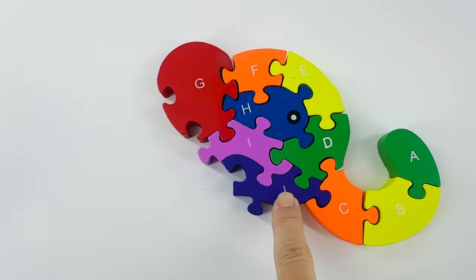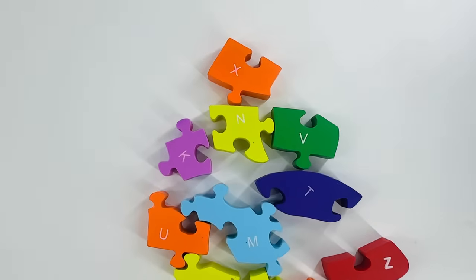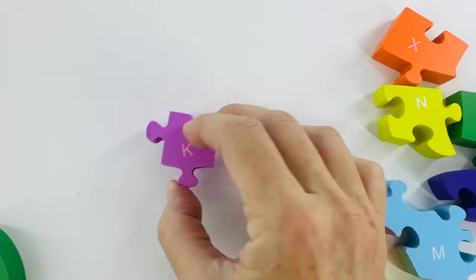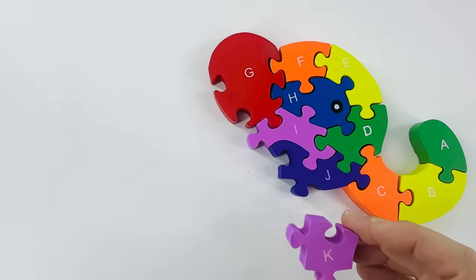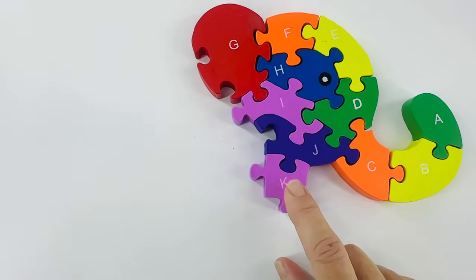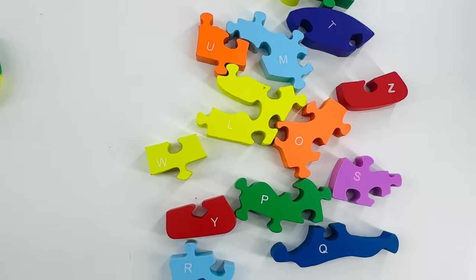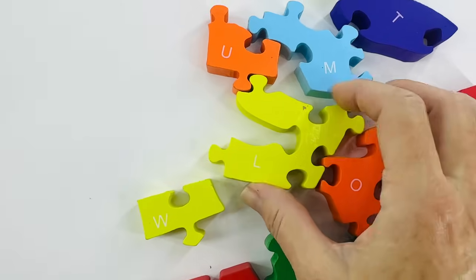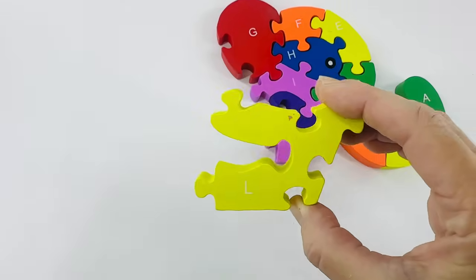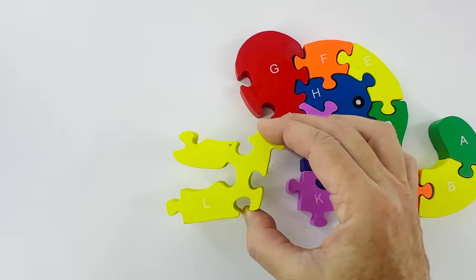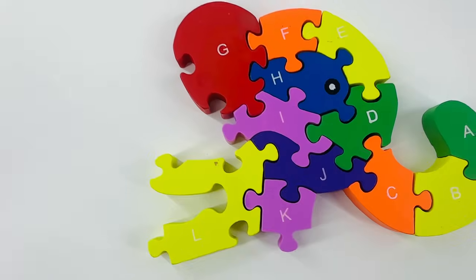After the letter J is the letter K. Do you see the letter K here? Can you point to it? Here it is. K is for kangaroo. Where does this go? Right there, yes. After the letter K is the letter L. Here it is. This one is yellow. L is for lion. This is a big shape. I wonder how it's going to fit.